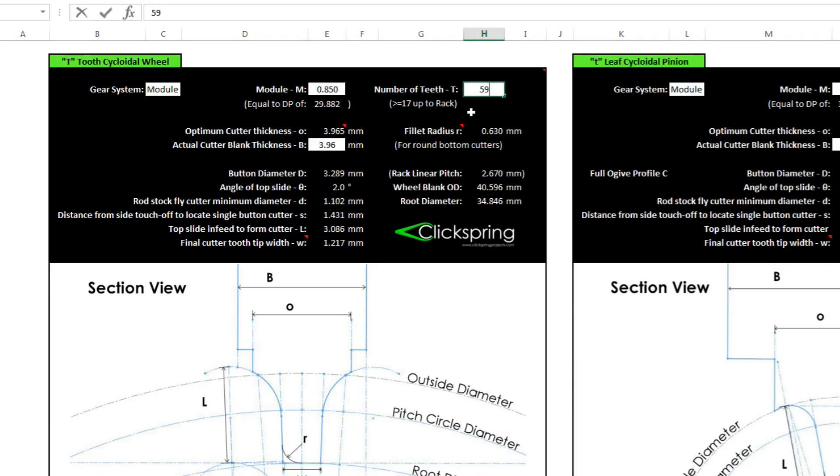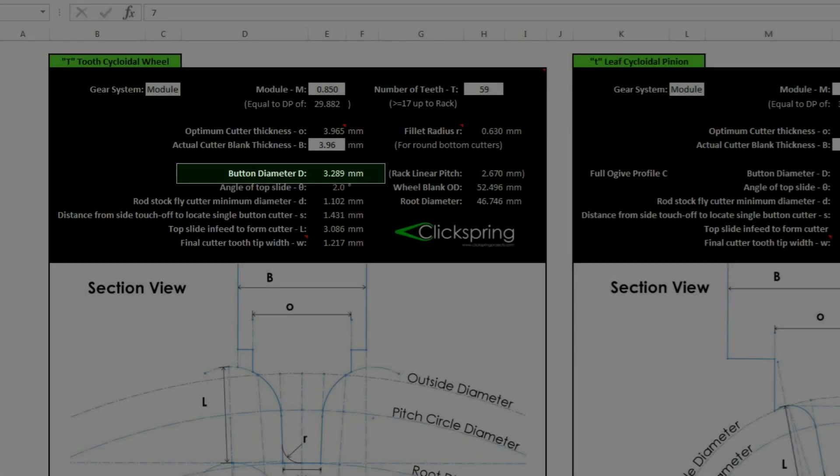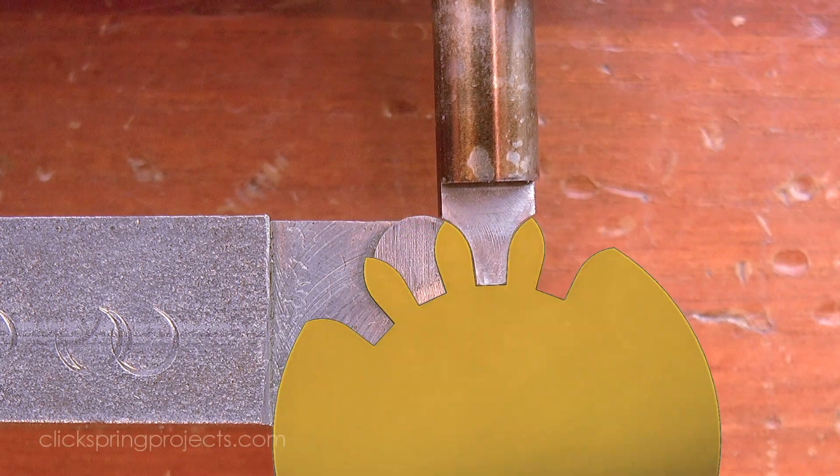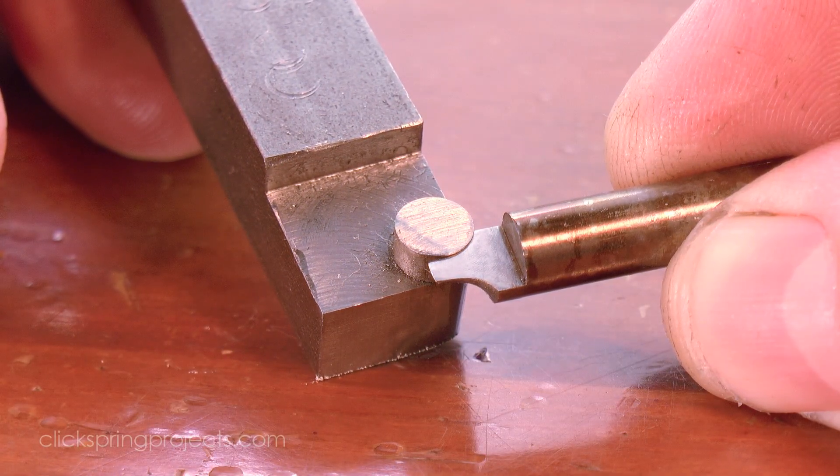The first step is to get the radius of the form tool from the calculator. You might recall when I made a stop work wheel some years ago, that I used a button tool to generate the radius required for the cutter.